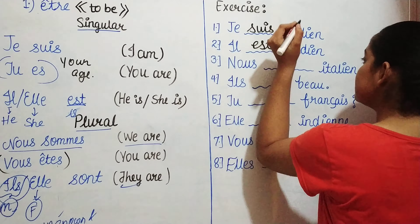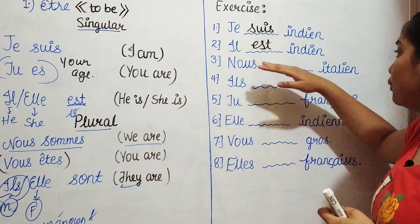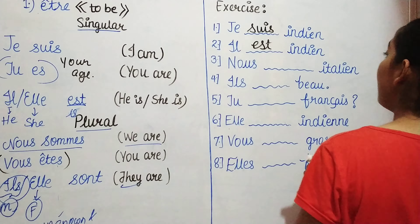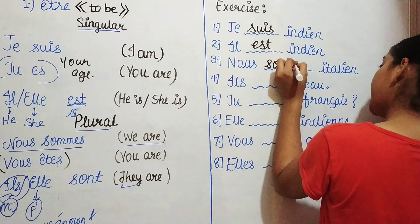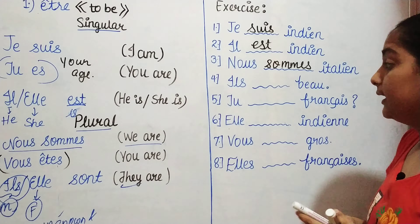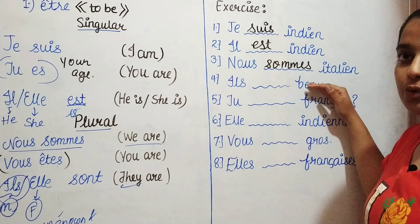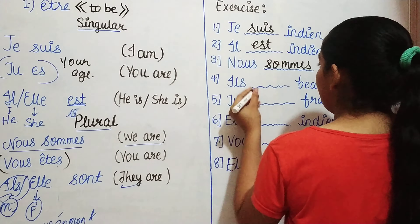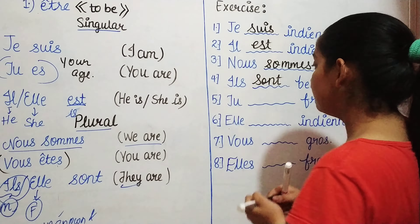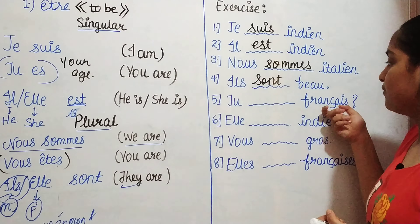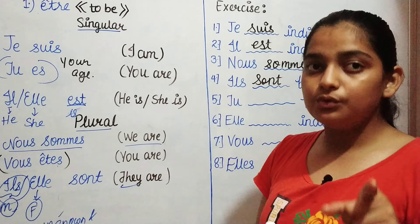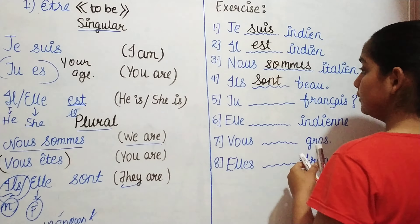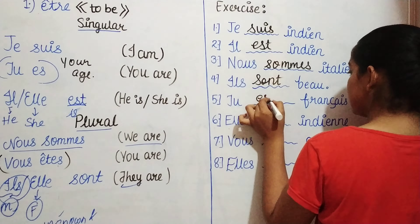Third: nous ___ italiens — 'we ___ Italian.' The answer is nous sommes italiens. Fourth: ils ___ beaux — 'they ___ handsome.' The answer is ils sont beaux. Fifth: tu ___ français — 'you ___ French?' Because it starts with tu, the answer is tu es français, meaning 'are you French?'